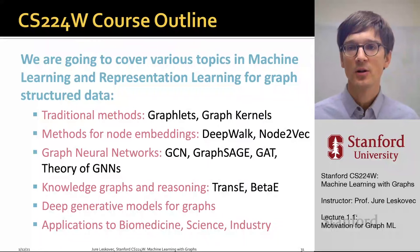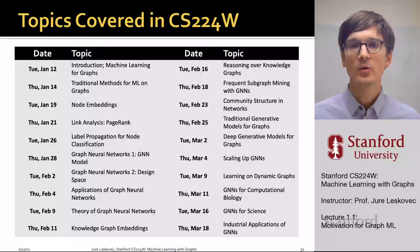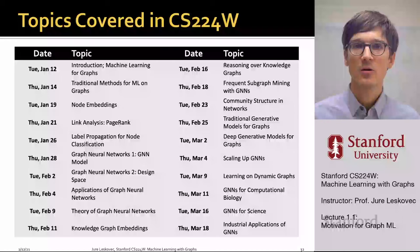Here is the outline of this course, week by week — 10 weeks starting today and running through mid-March. We will have 20 lectures and will cover all the topics discussed, with particular focus on graph neural networks and representation learning in graphs.